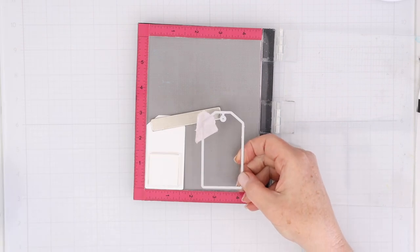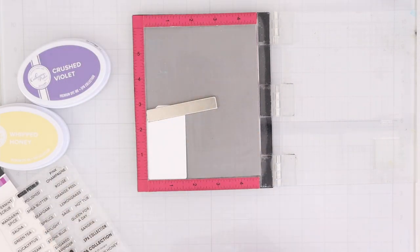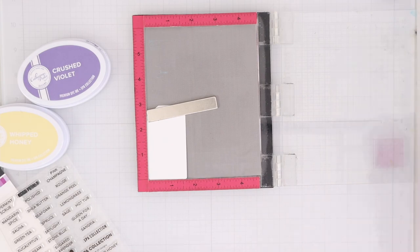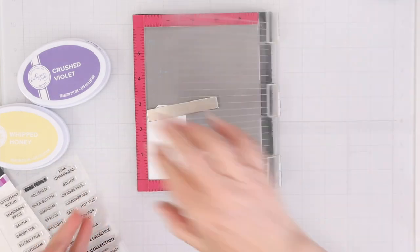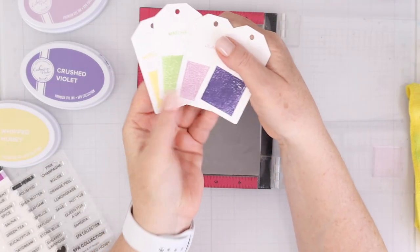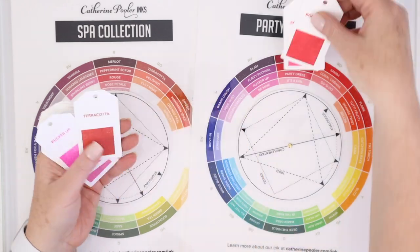Now when you're swatching just your basic colors, you want to try and use the paper that you normally stamp on. So I normally stamp on Neenah Solar White, so I am going to stamp on that for all of my ink swatches. These are the four new colors that were just released.